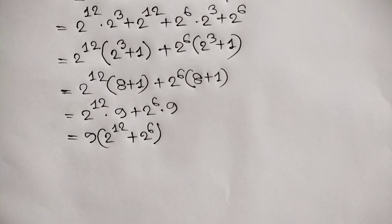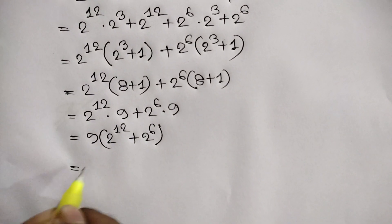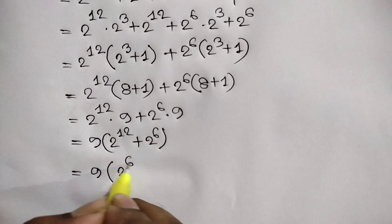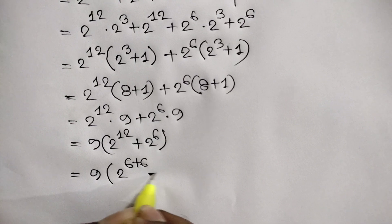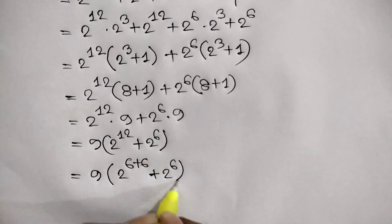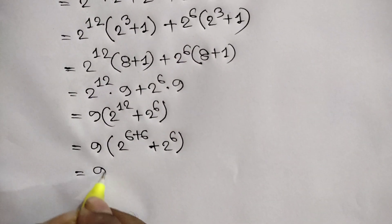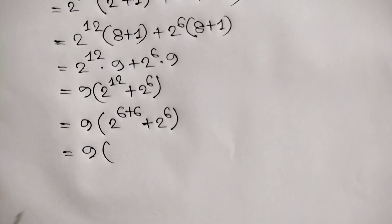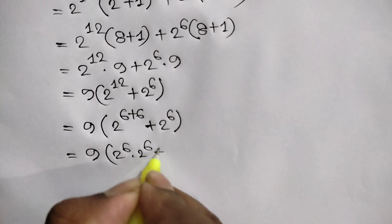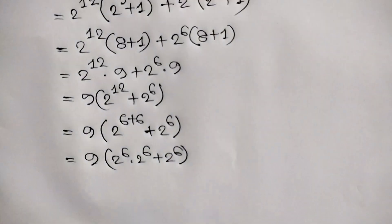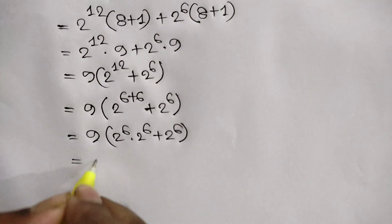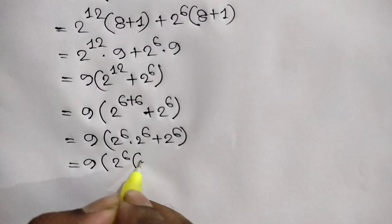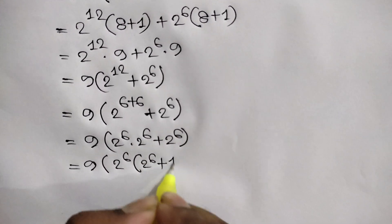From here we have two methods. In the first method, 2 to the power 12 can be written as 2 to the power 6 plus 6. Using the exponent rule, we can write 2 to the power 6 times 2 to the power 6, plus 2 to the power 6. Taking out 2 to the power 6, we get 9 times 2 to the power 6 times (2 to the power 6 plus 1).